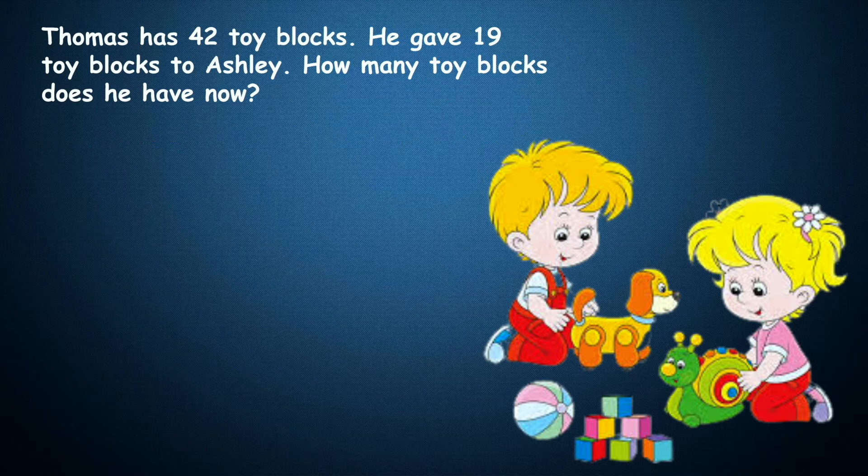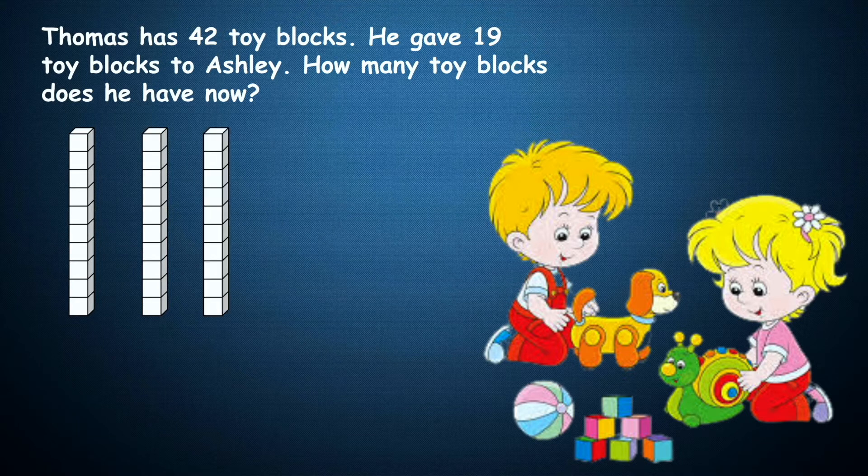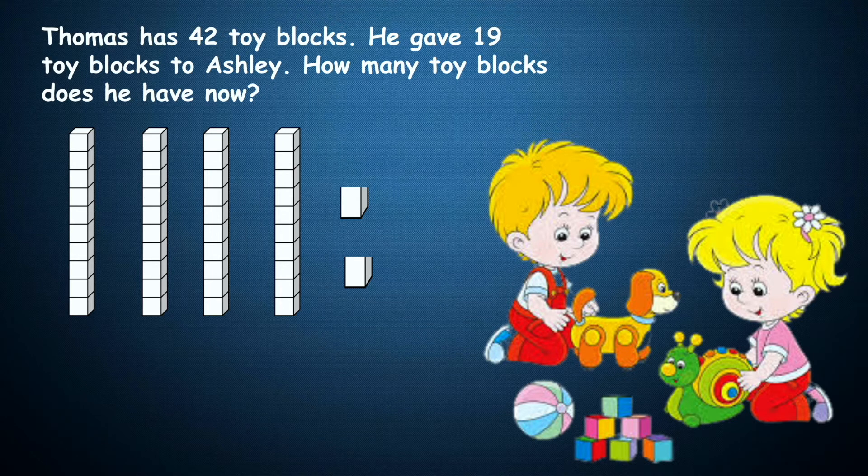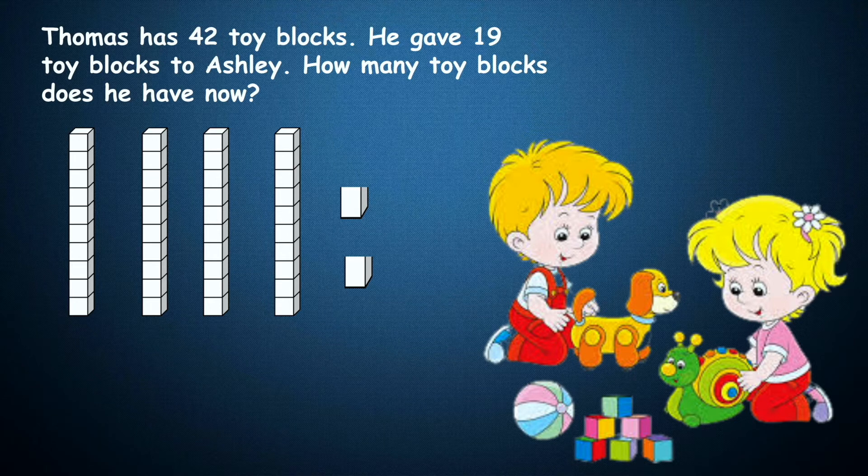So he has 10, 20, 30, 40, 41, and 42 toy blocks. So we have represented 42 by four tens and two ones.